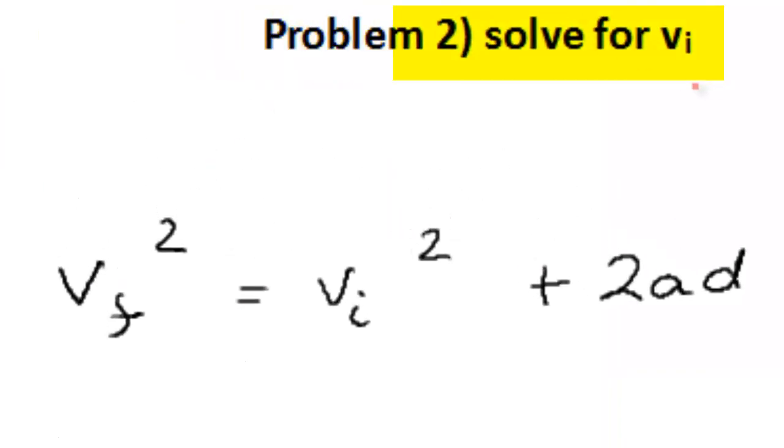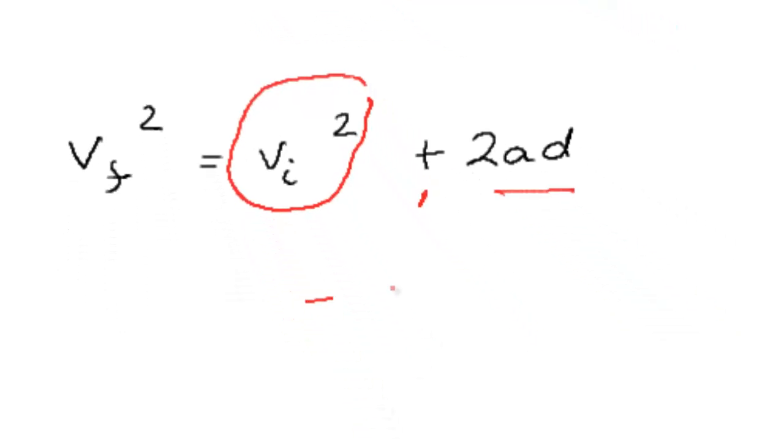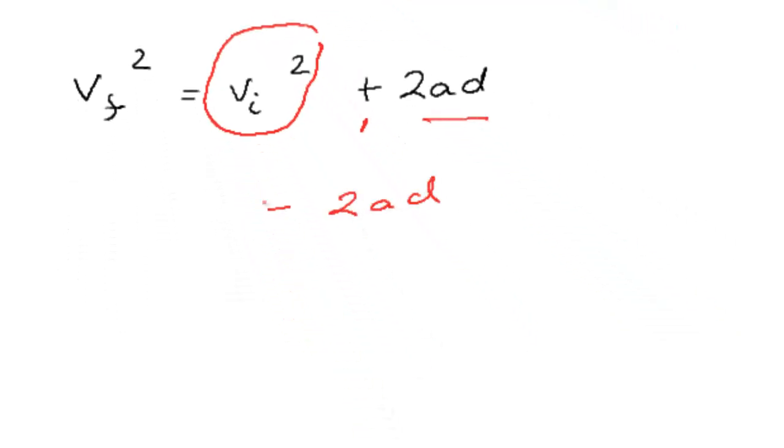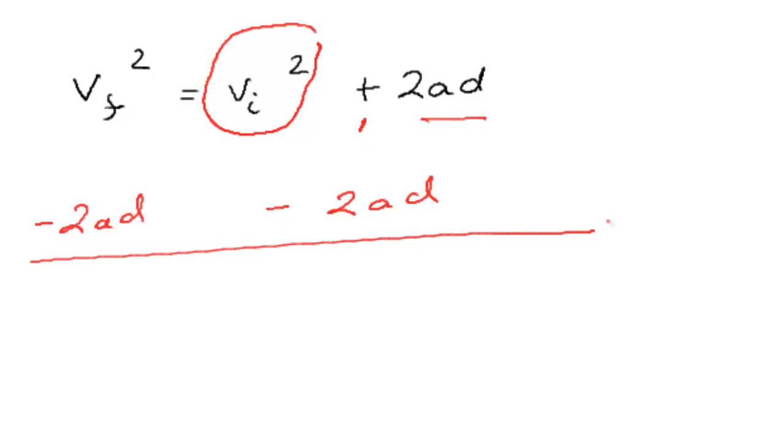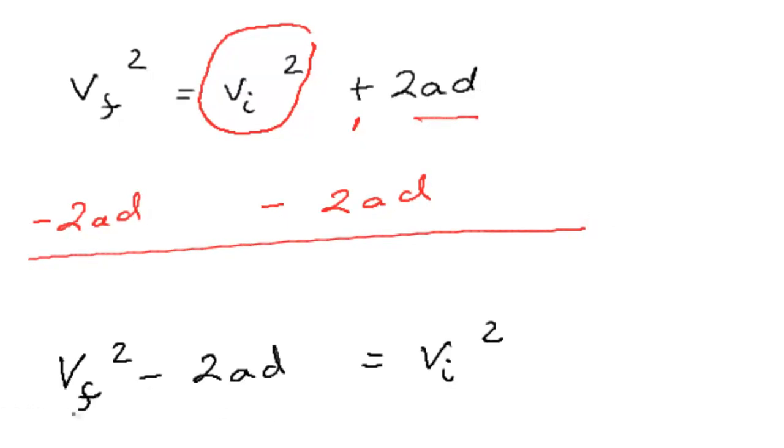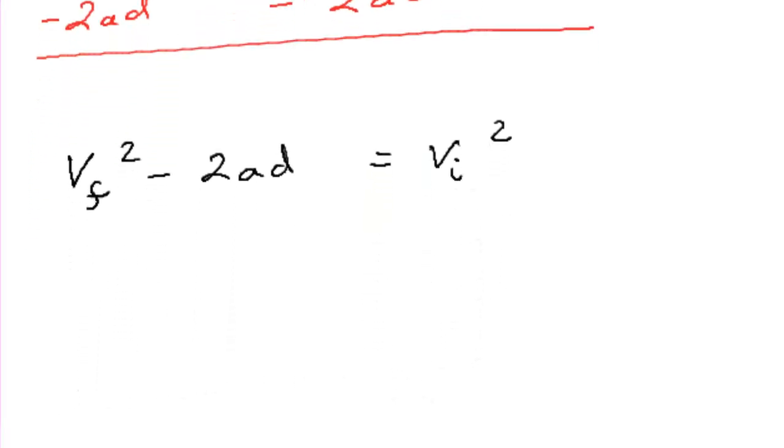Let's go back up. Now we're going to solve for VI. So again, we have a VI squared. And this time we're saying it's being added to this 2AD. So I want to get rid of the 2AD. So I'm going to subtract 2AD from both sides. That gives me VF squared minus 2AD equals VI squared. And we're looking pretty good here.